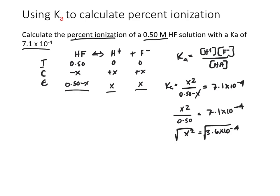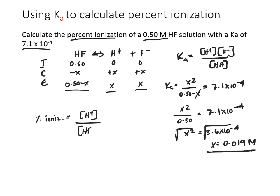Taking the square root of both sides, X equals 0.019 M. Now that we have our concentration of X, we use this value to figure out our percent ionization. Percent ionization equals H⁺ concentration divided by the initial concentration of HF, times 100. X corresponds to our H⁺ concentration, so percent ionization equals 0.019 divided by 0.50 times 100, giving us 3.8% ionized.